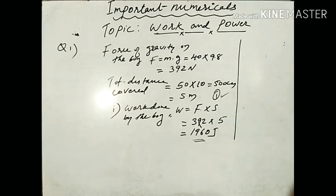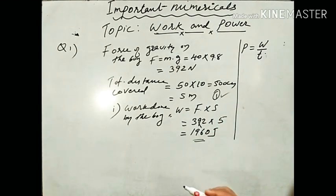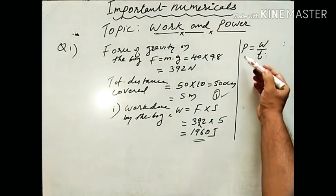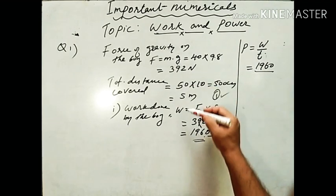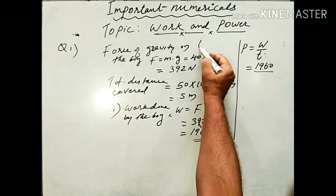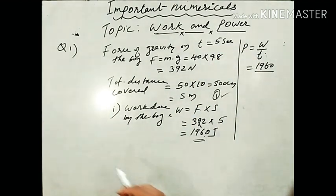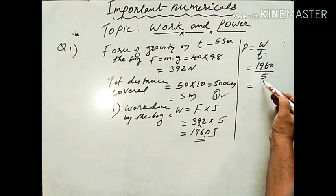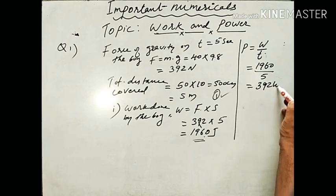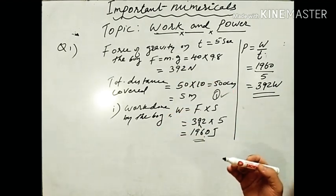Second part — power developed. Power is the rate of doing work. The formula is P = W/t. Work done is 1960 Joule, time given is 5 seconds. So power = 1960 ÷ 5 = 392 Watt. If you know the formula, you can easily solve numericals.